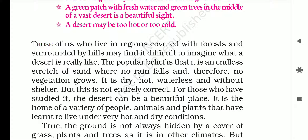The writer says that people who live in plain areas filled with greenery and surrounded by beautiful hills cannot imagine anything about a desert, because the desert is totally different from their living areas. Many people believe that deserts are areas covered with sand and without any rain, which is why there is no growth of vegetation. Desert places are usually dry, very hot and without water and shelter. But some studies prove this idea is not fully correct — people who have done research on it say desert lands can also be a place filled with beauty, as many different types of people, animals and plants have adjusted themselves to live under the dry and hot conditions of the desert.